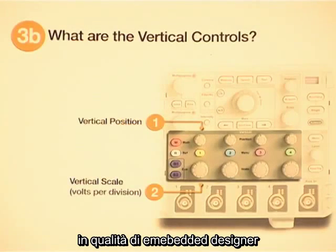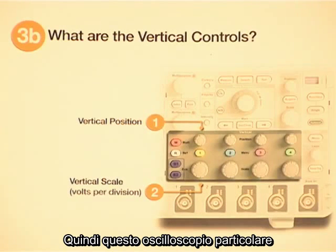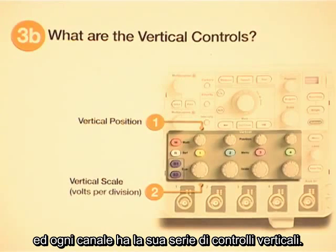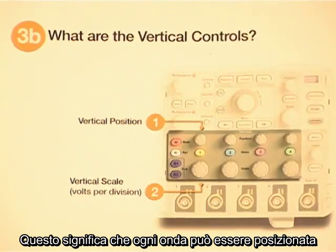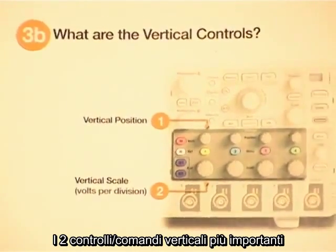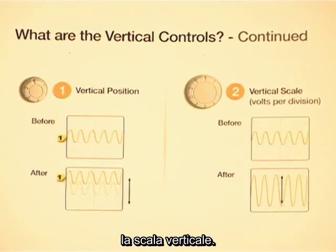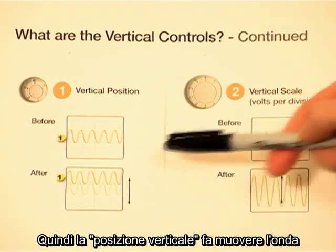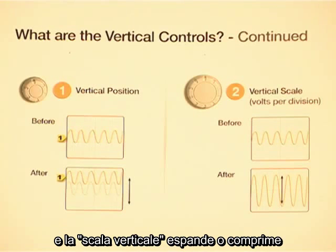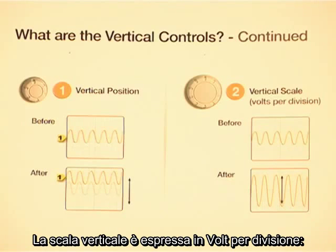This particular scope can display up to four analog channels from different inputs, and each channel has its own independent set of vertical controls. That means each waveform can be positioned independently of the others on the screen. The two most important vertical controls are the vertical position and the vertical scale.